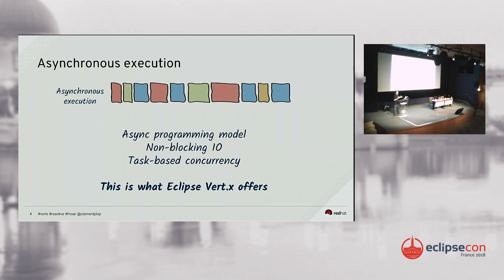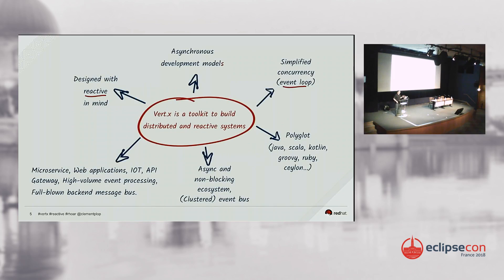However, there is a price to pay — if it were that simple we would all do this. To build such systems using this asynchronous execution model, you need an asynchronous programming model, non-blocking I/O, and task-based concurrency. This is what Eclipse Vert.x offers. It provides several programming models, a huge library for non-blocking I/O, and event loop-based concurrency. Vert.x is a toolkit — just a library — designed to let you implement distributed and reactive systems. It has been designed with reactive in mind since the first line of code, not added as an afterthought.